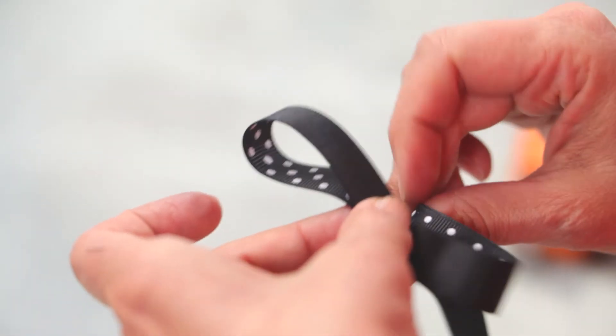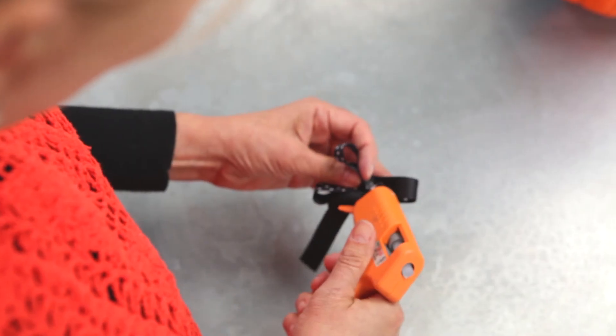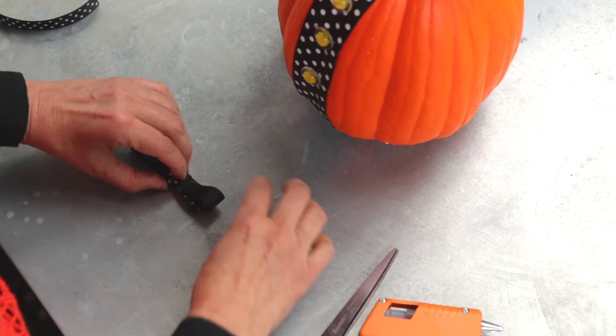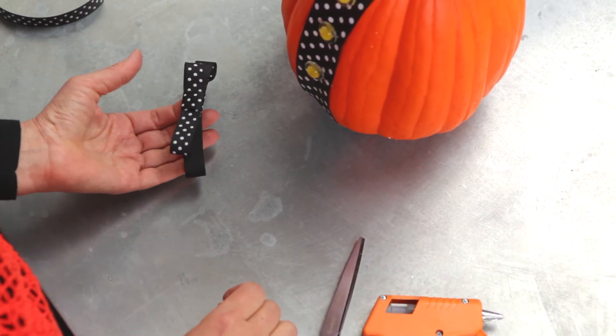Take a length of the thinner ribbon, loop it, and glue it in place. Cut a short piece to wrap around the center of the bow and glue it in the back. Now glue the bow to the neck.